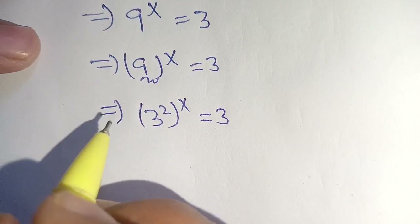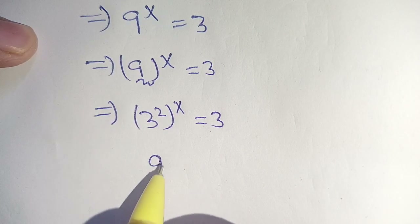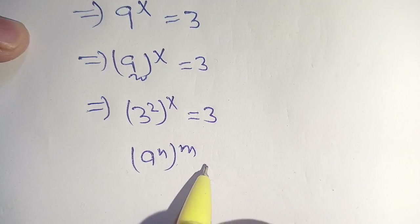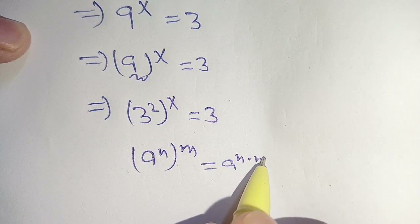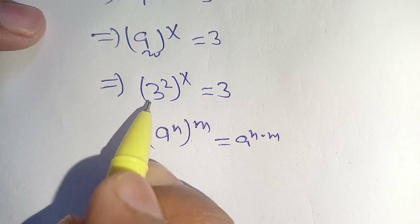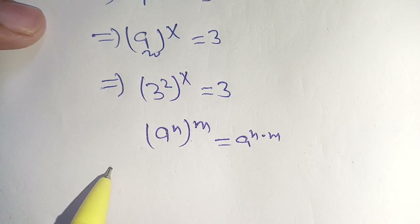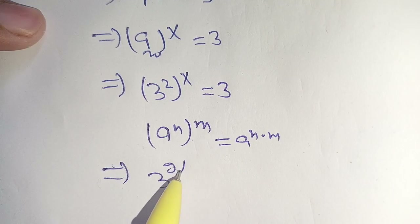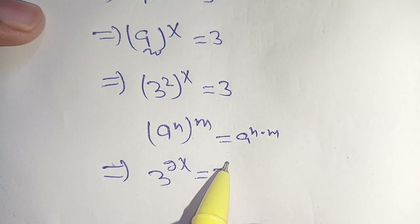We know that if a to the power n, in brackets, raised to the power m, then we can write this as a to the power n times m. Applying this identity on our left hand side, we get 3 to the power 2x is equal to 3 to the power 1.